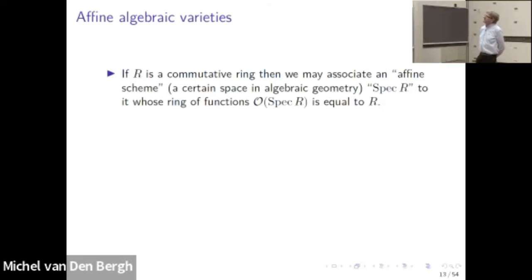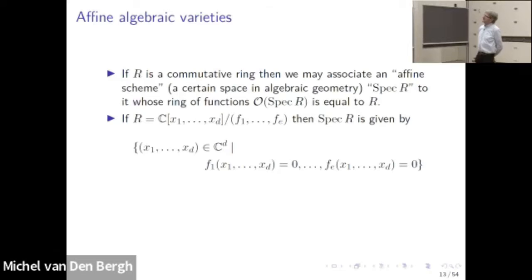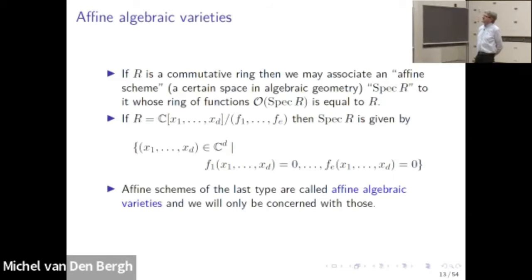We're basically talking elementary algebraic geometry. In algebraic geometry, it starts with something called an affine scheme, which is associated to a commutative ring — it's some sort of space whose ring of functions gives you back the ring you started from. We will only be concerned with finitely generated rings, and the associated space is just the solutions of the equations. This will be called an affine algebraic variety, and a general algebraic variety is something which is covered by affine algebraic varieties.